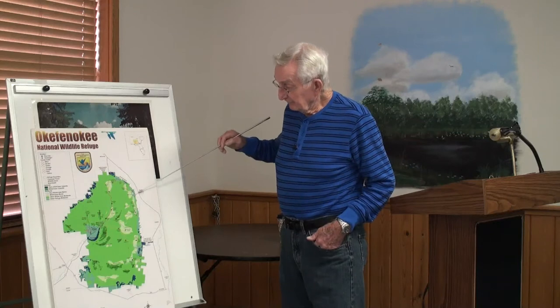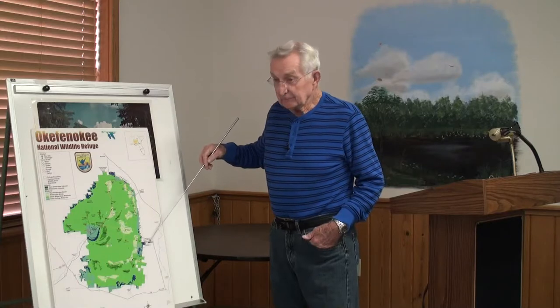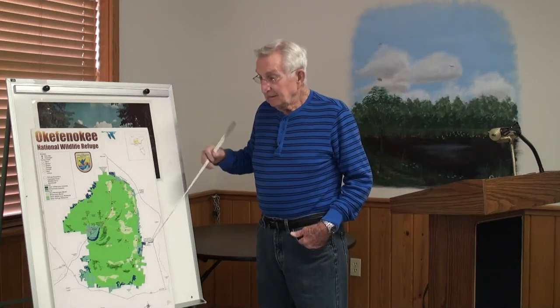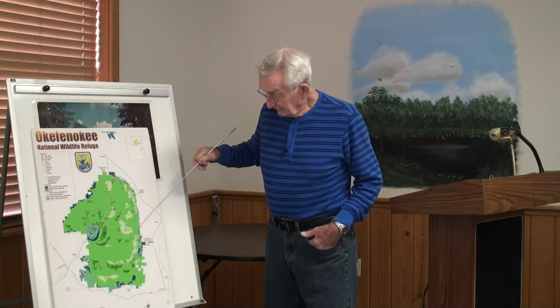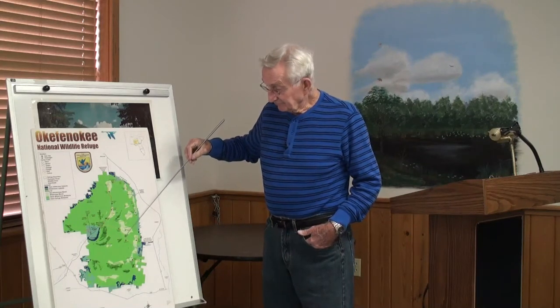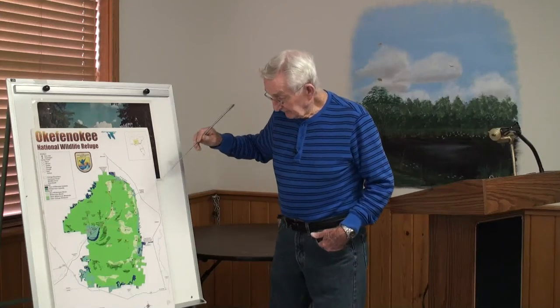The next entrance is further south — the National Wildlife Refuge. It has several common names: Suwannee Canal, and also Camp Cornelia, named after the daughter of the man who dug the canal. This is the origin of the Suwannee Canal, right here — about 11 miles long. There are numerous side trails that go to other sites in the swamp, which we'll mention later.